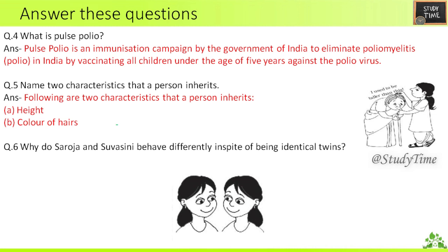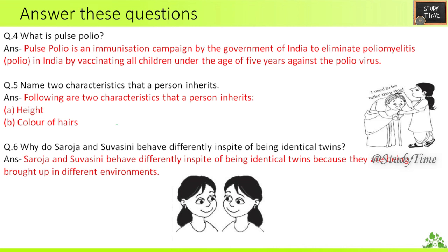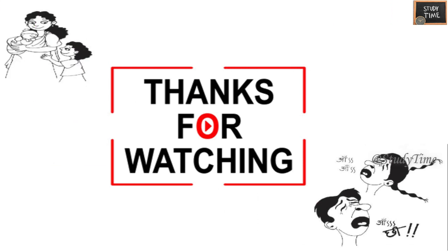Sixth — why do Saroja and Suvasini behave differently in spite of being identical twins? They behave differently because they are being brought up in different environments. This is a simple chapter; hope this video is useful. We'll see you in the next video. Thanks for watching.